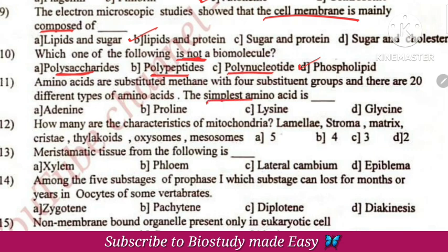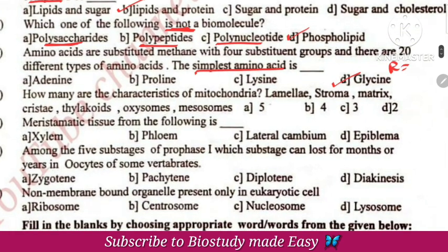Amino acids — the simplest amino acid is glycine, because its R group is a hydrogen atom. Next, mitochondria parts: it has stroma, matrix, crista, and oxysomes. So it has a total of 4 structural characters.